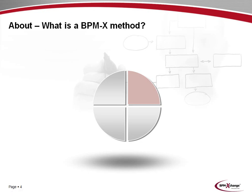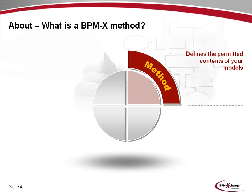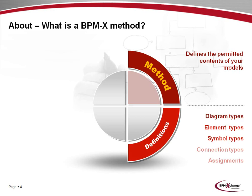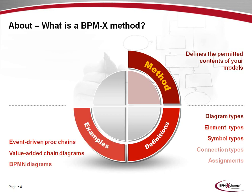A method simply defines the permitted contents of your models. From a technical perspective, a method essentially is a set of type definitions, including diagram types, element types like events or functions, symbol types, connection types for connecting elements, and so-called assignments or hyperlinks. Examples of supported diagram types are event-driven process chains, value-added chain diagrams, as well as diagrams given in the BPMN notation.